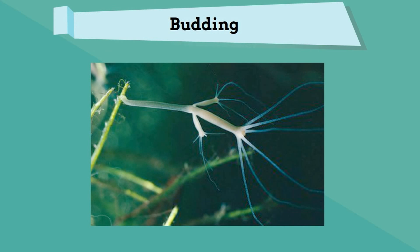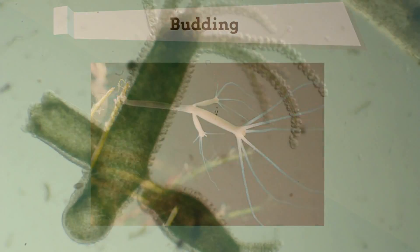Budding occurs when a new organism begins to grow out of the parent. This new bud is genetically identical to the parent. When it gets large enough, it breaks off, and this new bud can live on its own. Take a look at this budding.